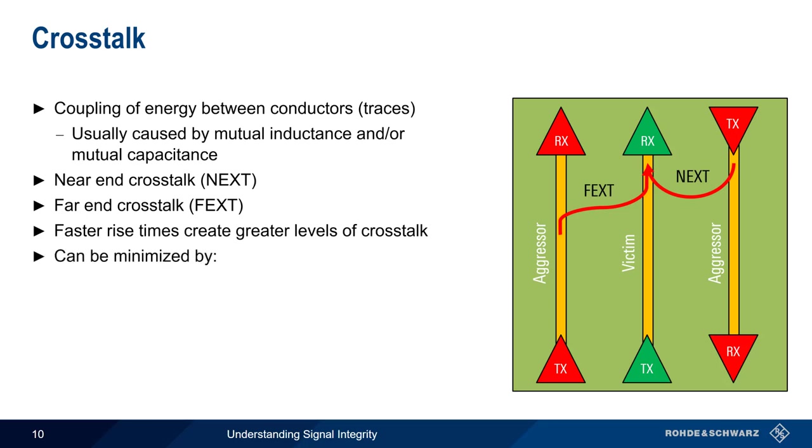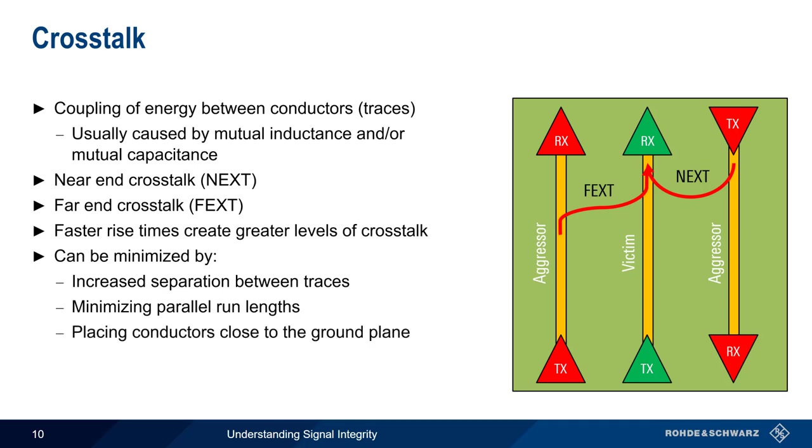There are a number of different ways of minimizing crosstalk. Increasing the separation or distance between the traces, minimizing the length of parallel trace runs, and placing conductors close to the ground plane are some of the more common ways of minimizing crosstalk in PCB designs.